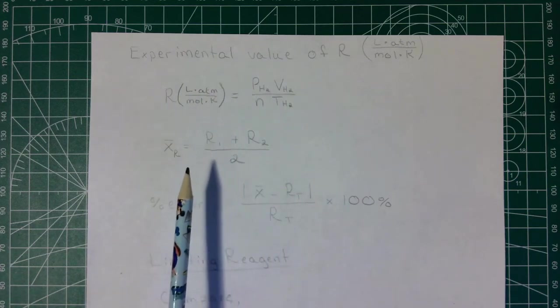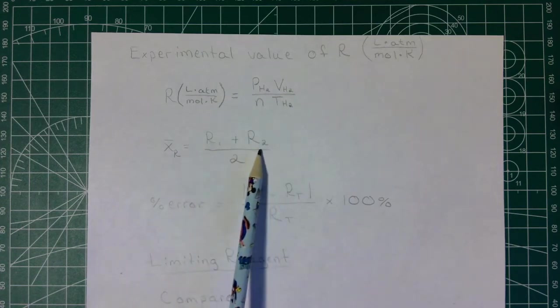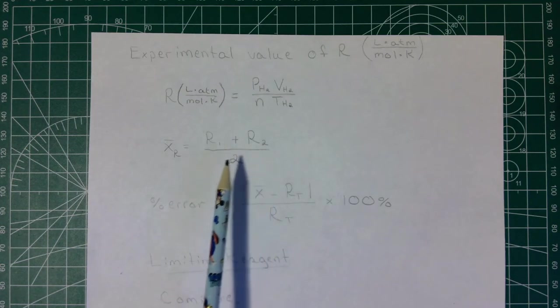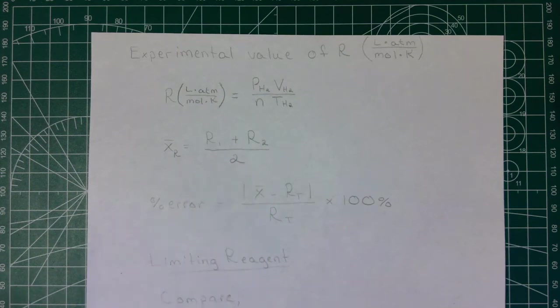We're going to do that for two trials. We're going to have an R for trial 1, we're going to have an R for trial 2, and then we're going to calculate an average by adding the two together and dividing by 2.